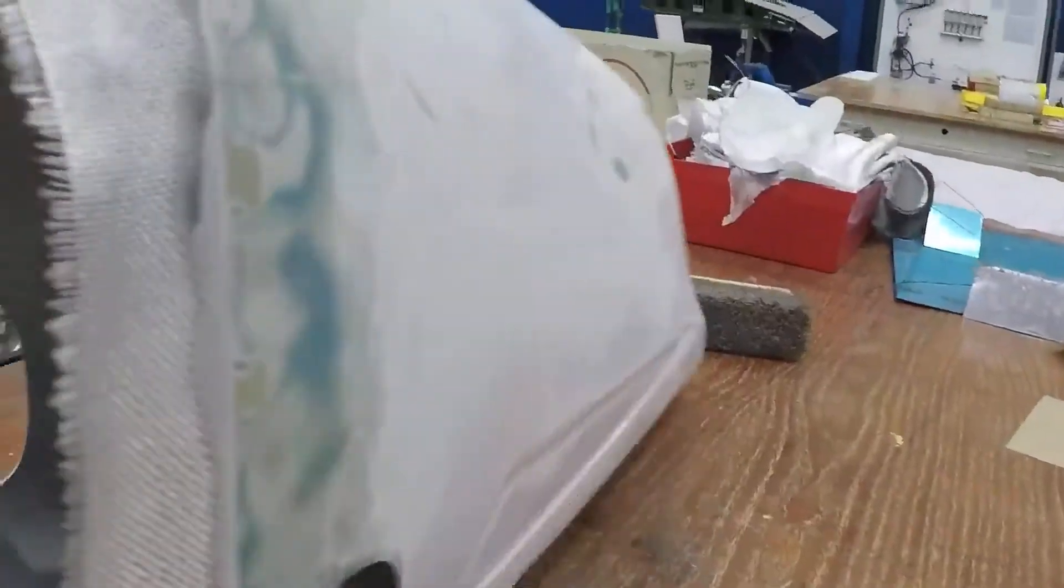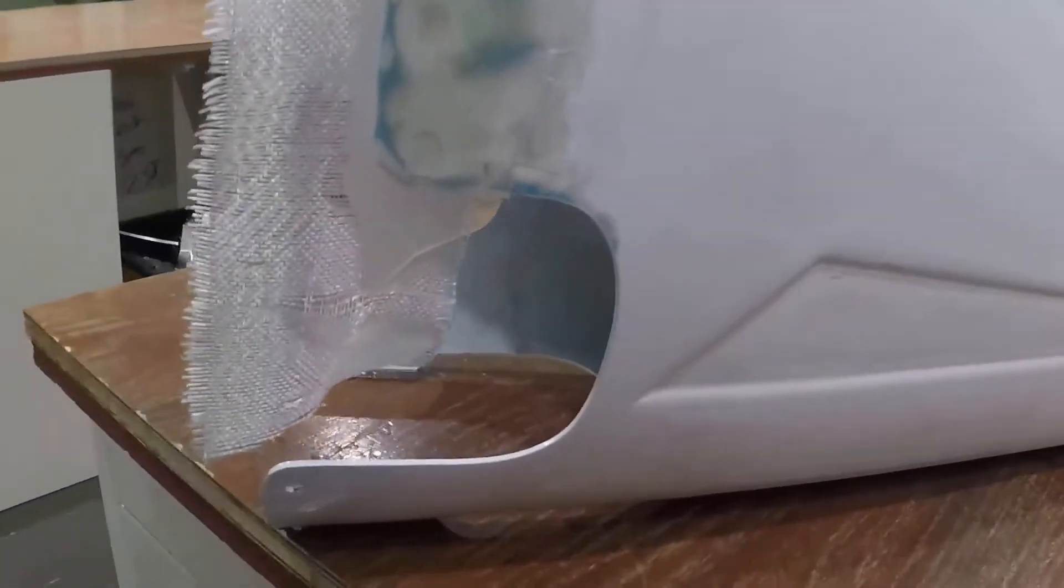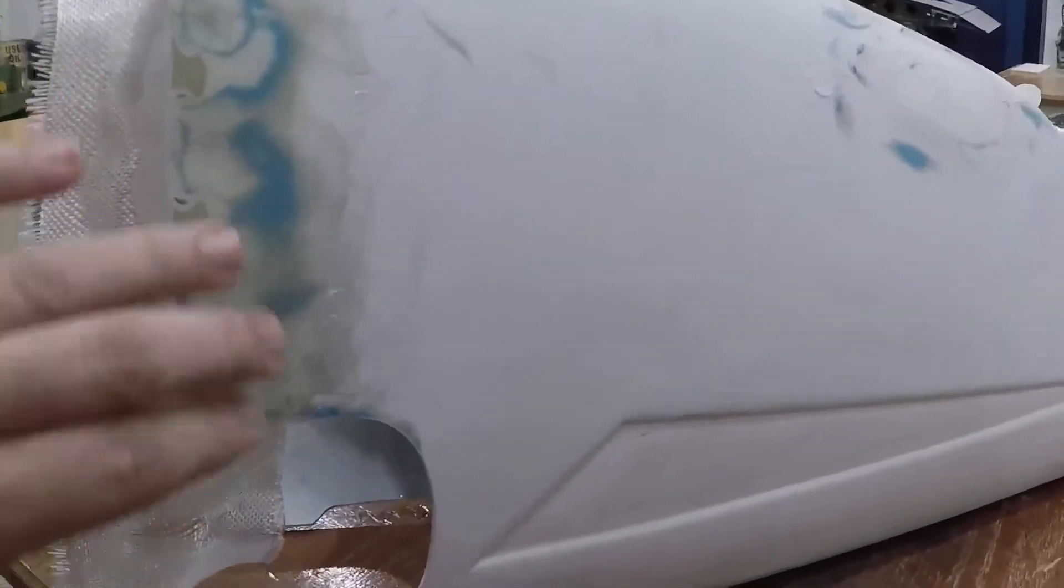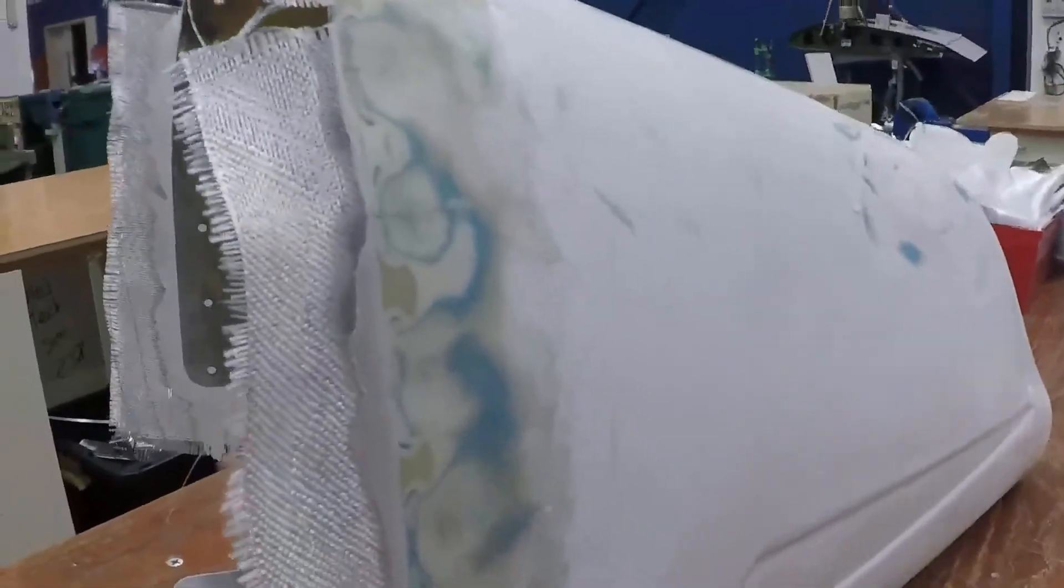I'll just sand that, get that nice and contoured, and then re-drill these holes where they were. And then probably sand the whole thing up a little bit, give it a coat of UV protectant, because I'll need to put UV protectant paint where this new glass is. Give it a coat of UV protectant primer, and then a coat of paint.